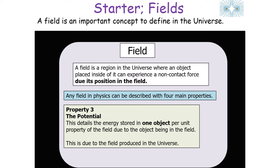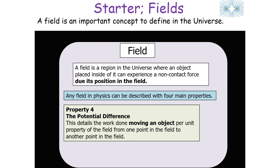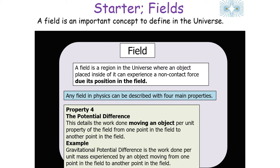The potential details the energy stored in one object per unit property of the field due to the object being inside the field. For example, the gravitational potential is the energy per unit mass experienced by an object inside a gravitational field. The fourth property is the potential difference, which details the work done moving an object per unit property of the field from one point in the field to another.